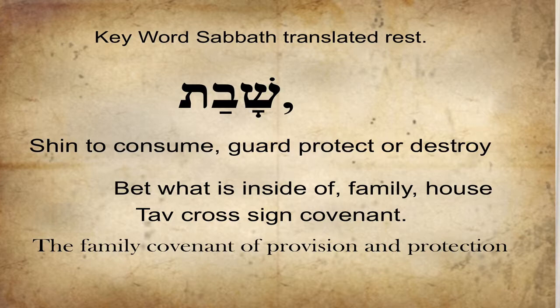Then you get bet — in the pictographic language, it's a picture of an ancient tent or house, and it denotes the family, what's inside the house. Then you get tav — one of the meanings for tav is covenant and cross. Remember, Yeshua was nailed to the cross to establish the covenant of eternal life. So shin-bet-tav: the provider of peace, protection, and provisions for his family covenant — shabbat.